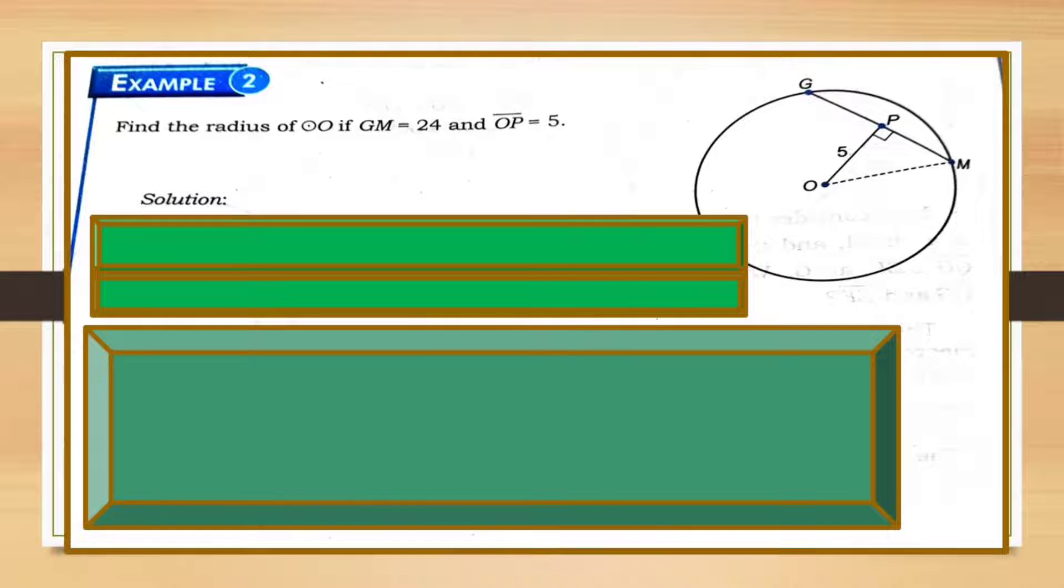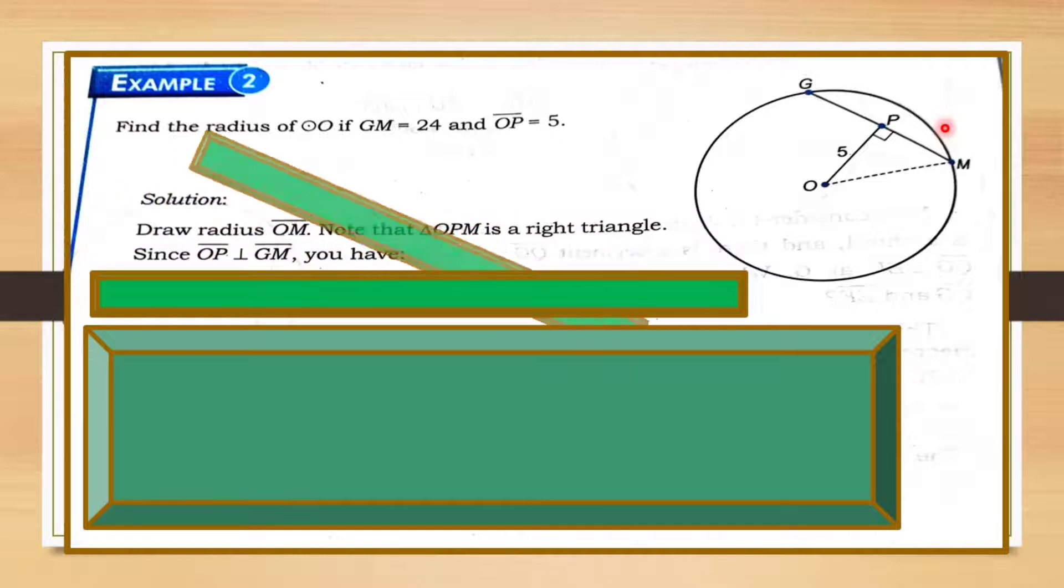In our example number 2, we are to find the radius of circle O. If GM, chord GM, is equal to 24 and segment OP from the center is equal to 5. We have to draw the radius OM. We now have triangle OPM. And from the center, perpendicular, when it's perpendicular it's automatically a right angle. Therefore, our triangle OPM is a right triangle.